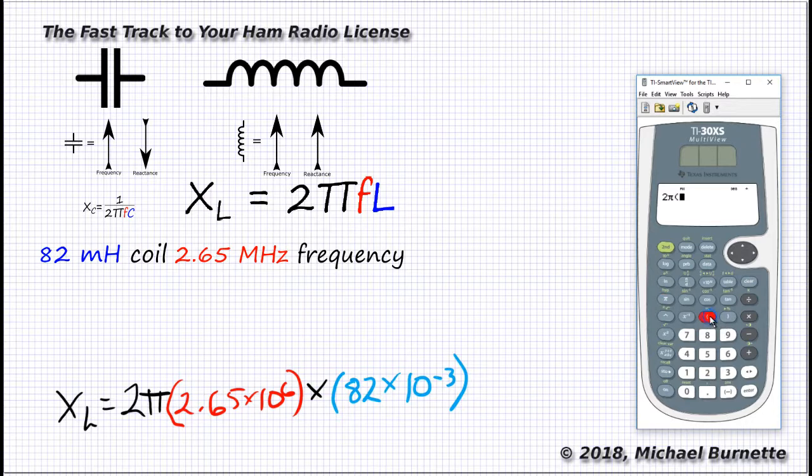Here we go. 2π times, parentheses, 2.65, and then the times 10 to the nth key, a 6, jog it over 1, and parentheses, times, other parentheses, 82, and that times 10 to the nth key, a negative key, not the subtract key, the negative key, a 3, jog it over 1, put a parentheses, and hit enter. You should be looking at 1,365,336 or so. Excellent. That's ohms because we used hertz and henrys in our calculations, so we'll call it 1.4 megaohms.